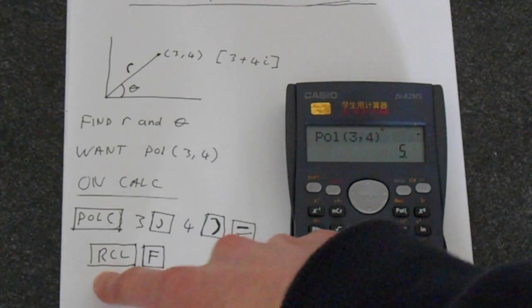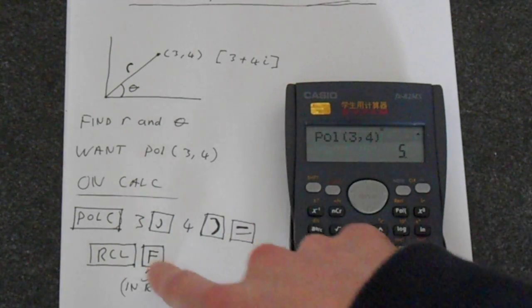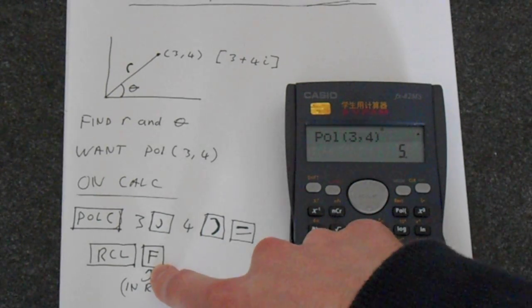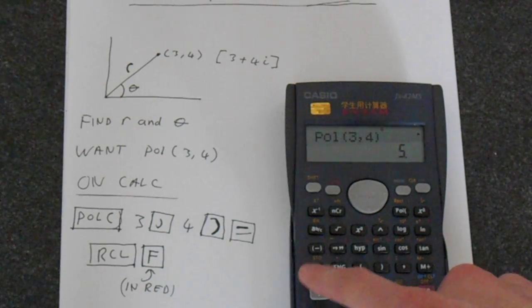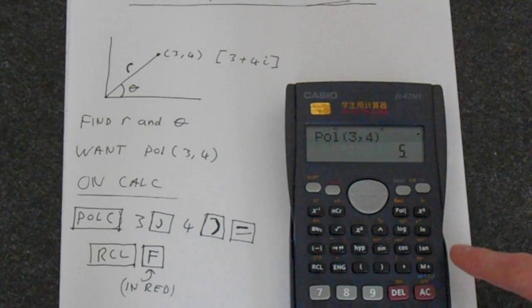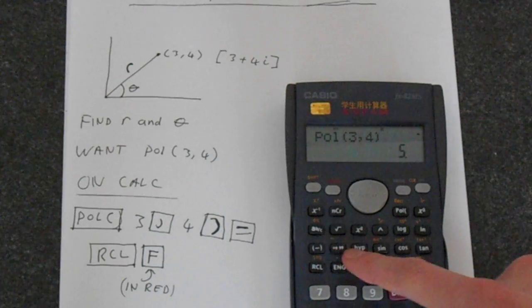The calculator stores the theta value in this memory location F. See these red buttons. So to access that, we're pressing RCL, which is to recall. And then if we go to look at all these red numbers, A, B, C, D, E, and we want F at the end.